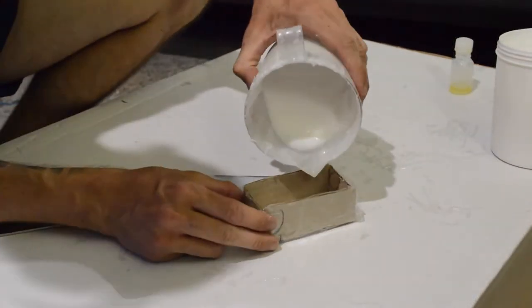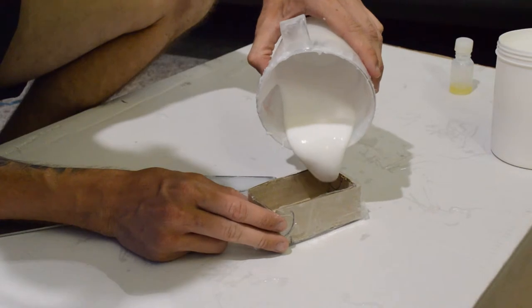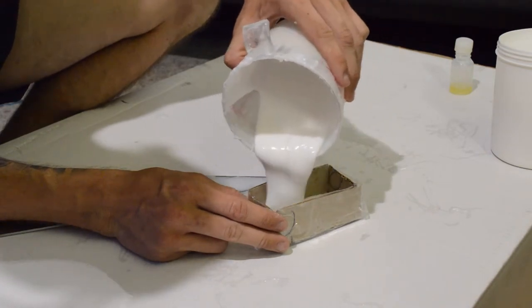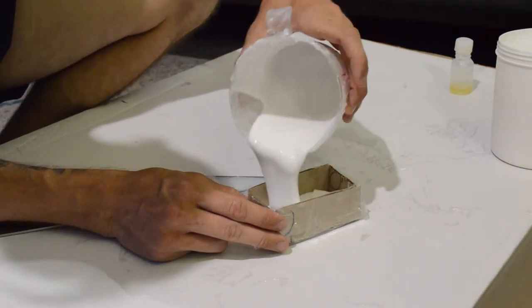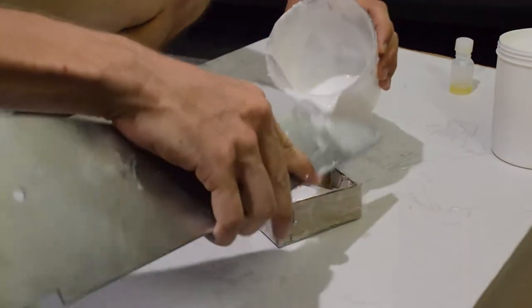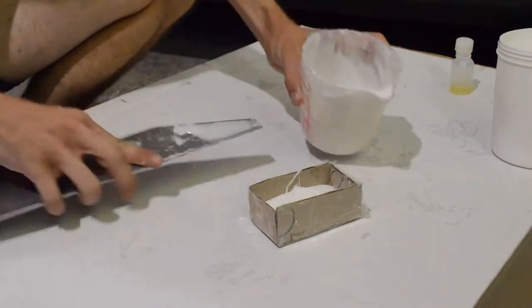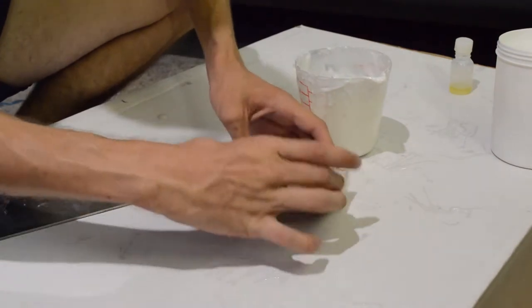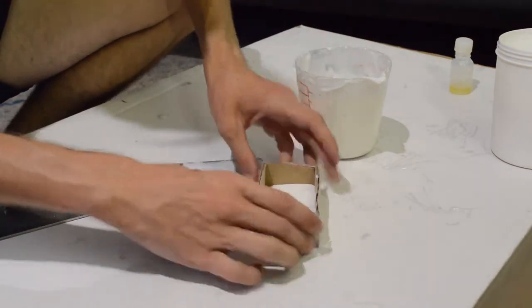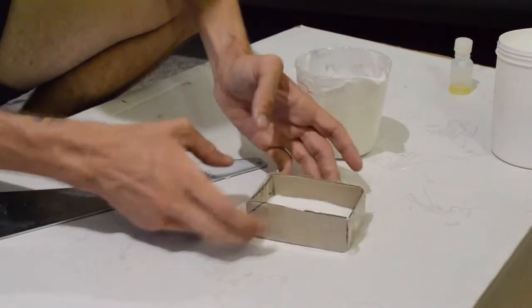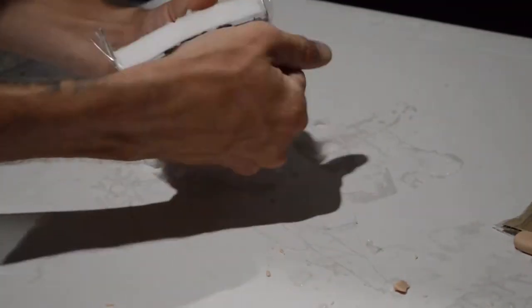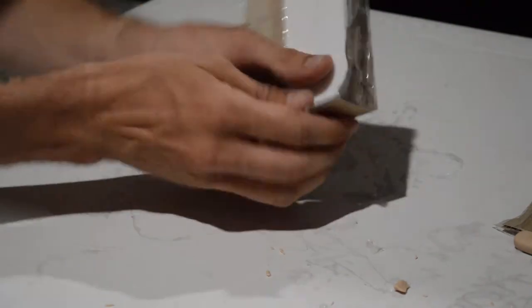Once you have mixed the silicone rubber thoroughly, you can then pour it on top of the grub and let it sit for 24 hours. After 24 hours you can then remove the cardboard and remove the grub from the mould.